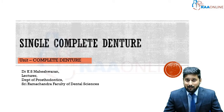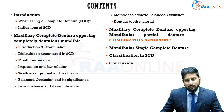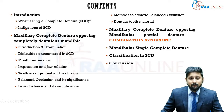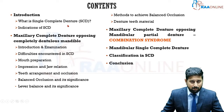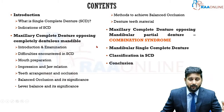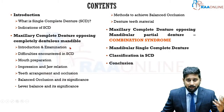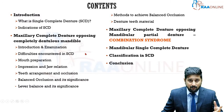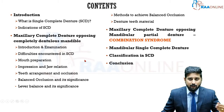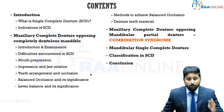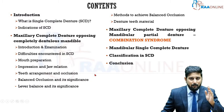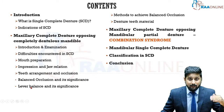Today we are going to be discussing about single complete denture. The contents include an introduction on what is a single complete denture, the indications where you can give a single complete denture, followed by the first situation — a maxillary complete denture opposing a completely dentureless mandible. We'll cover treatment planning sequence, intraoral examination, difficulties encountered, mouth preparation, impressions, jaw relation procedures, and teeth arrangement and occlusion — including what balanced occlusion is and its significance.